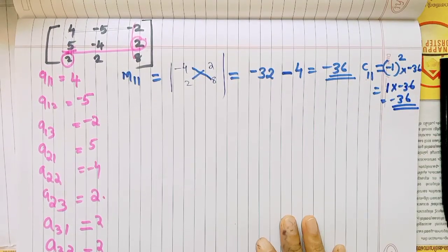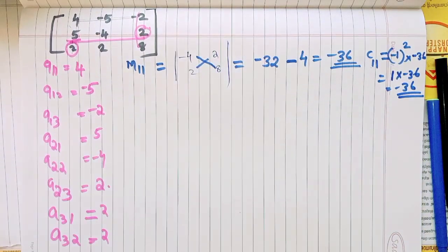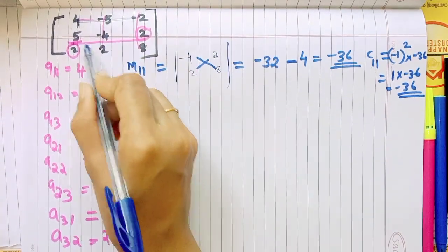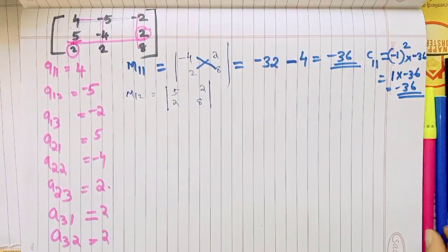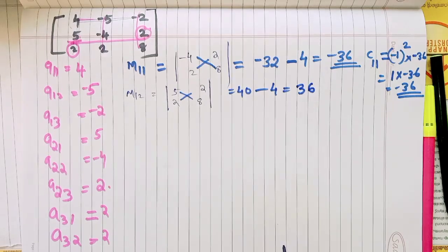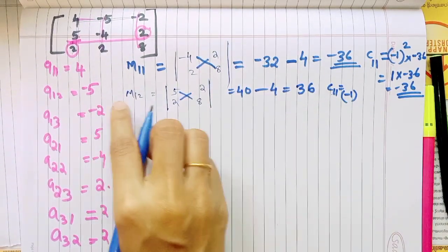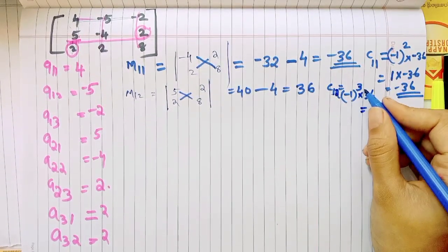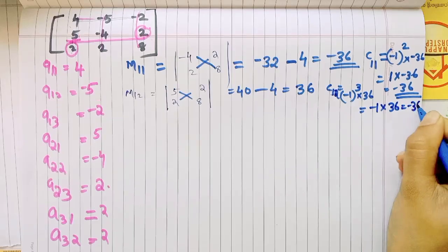We take the second element A12. A12 is negative 5. We cancel the row and column. M12 is equal to — 8 into 5 is 40, minus 2 into 2 is 4, so M12 equals 36. Then C12: negative 1 raised to 1+2 is 3, so C12 equals negative 1 times 36, which is negative 36.